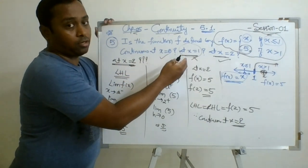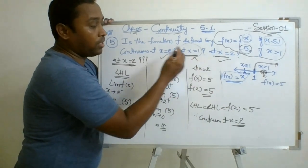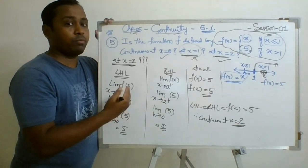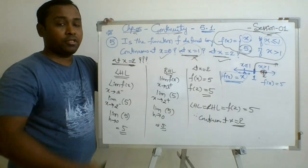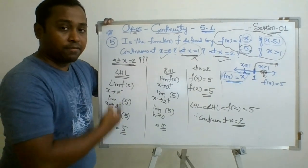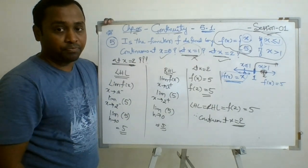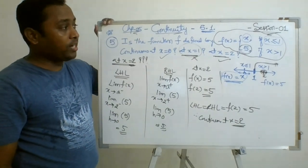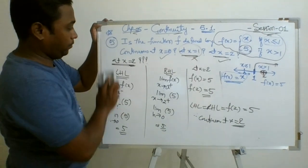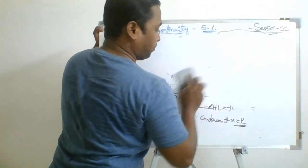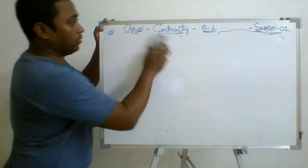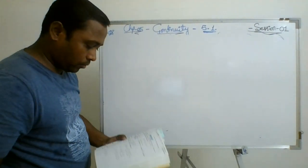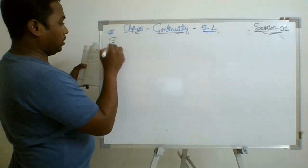Now I am taking one more question where there will be some interesting points to discuss. Question number 7 is given. The function is f(x) defined as: modulus of x plus 3, some form with minus 2x plus 2. The function is defined in three ways. We need to check the continuity of this graph.